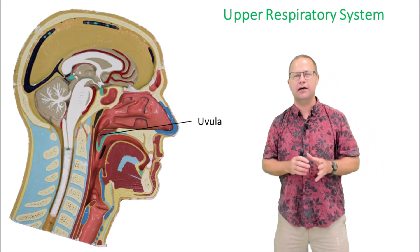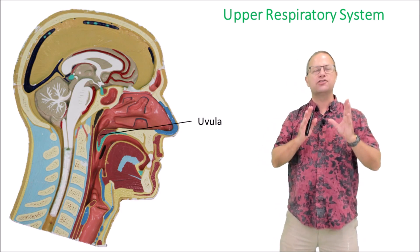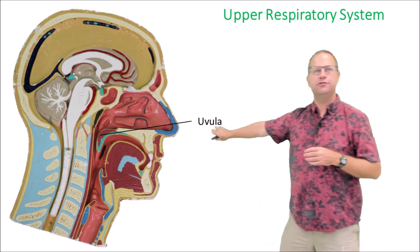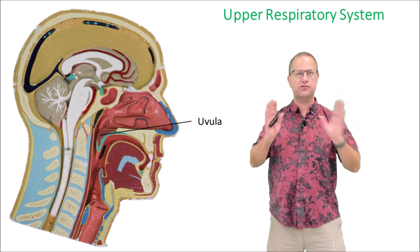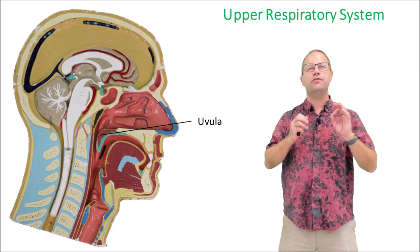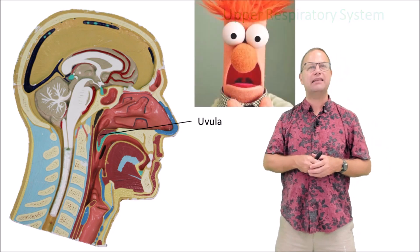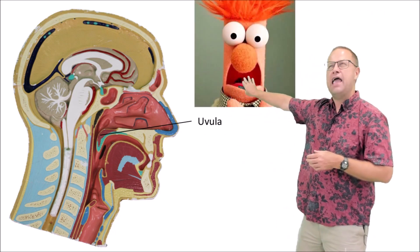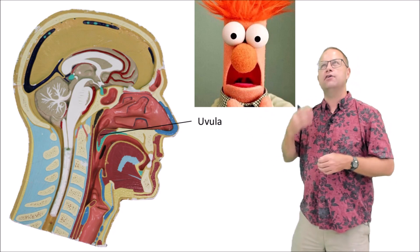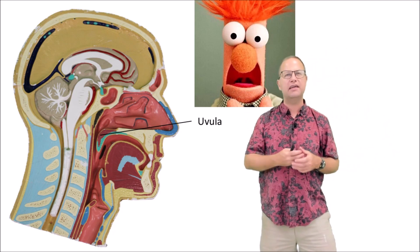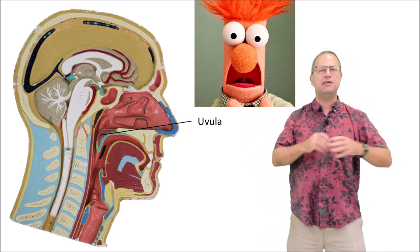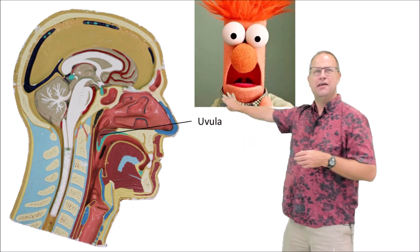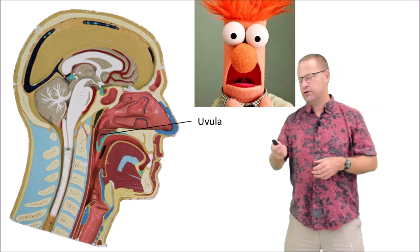Now we have a structure called the uvula. The uvula is part of our soft palate — it's a word that looks very similar to vulva but is not the same, so make sure you spell it correctly. The uvula is this punching bag-like structure in the back of our soft palate, and we think its function is to cover up the nasopharynx during swallowing. If you've ever seen the Muppet Show when a Muppet's really upset, you can see that uvula in the back of their mouth.